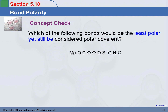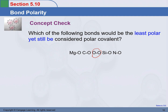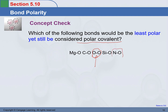Concept check. Which of the following bonds will be the least polar yet still be considered polar covalent? Least polar has the smallest electronegativity difference. The bond between two oxygen atoms would have a difference of zero — that is the smallest — but that bond would be non-polar. The question asks for least polar while still being polar covalent, so look at the others. The answer is nitrogen and oxygen — they are right next to each other and have the smallest electronegativity difference other than the two oxygen atoms.